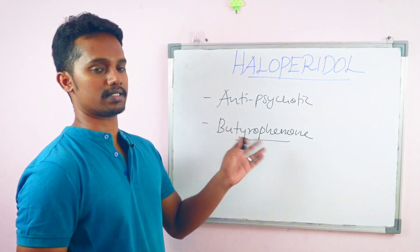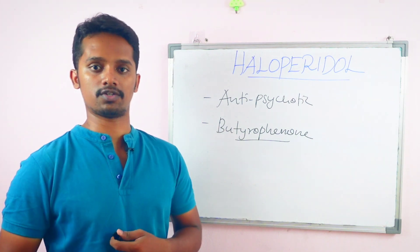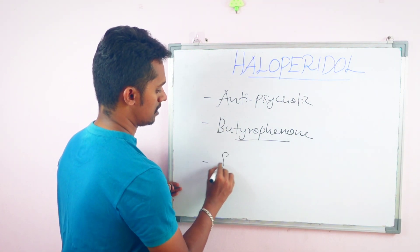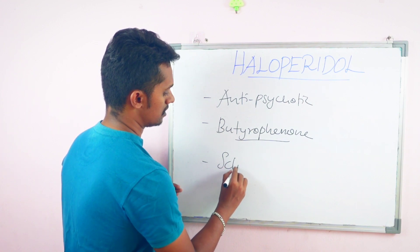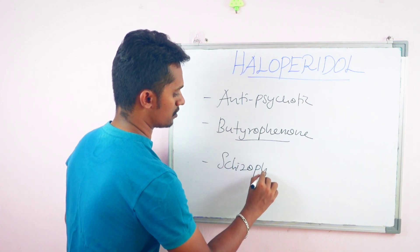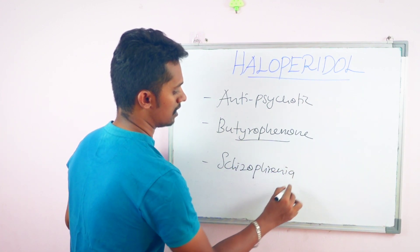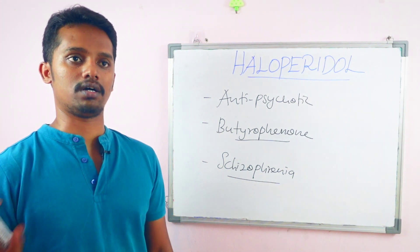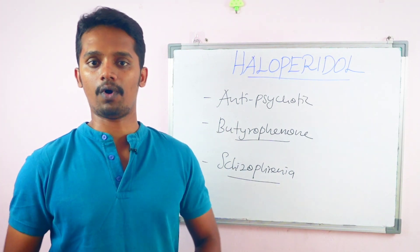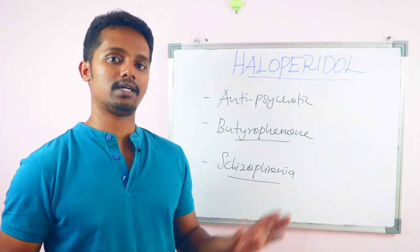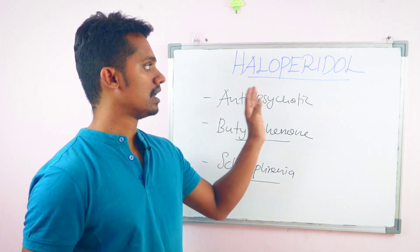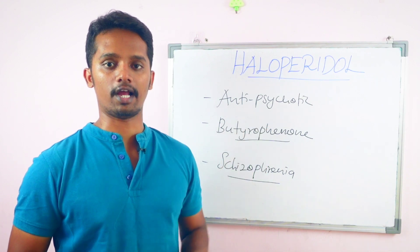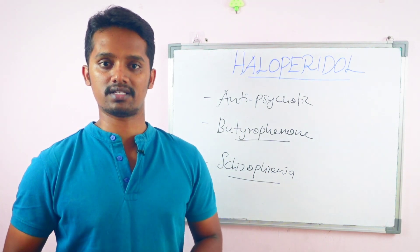This drug is used particularly for psychotic disorders. Psychotic disorders are major diseases. Schizophrenia is one condition for which haloperidol is one of the most widely used drugs. We will talk about this drug's mechanism in this video.